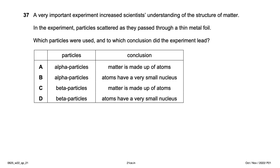An important experiment increased scientists' understanding of the structure of matter: particles were scattered as they passed through a thin metal foil. This is simply the alpha-scattering experiment. Alpha particles were used and the conclusion was that atoms have a very small nucleus — option B.